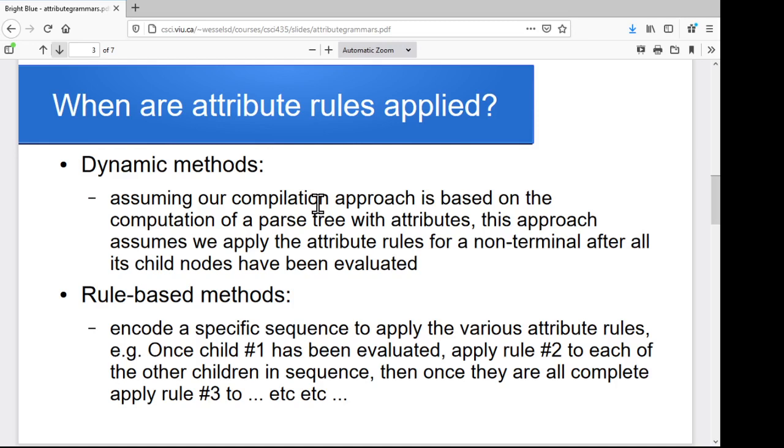Perhaps the most natural method of deciding when you're going to actually apply all those rules is to say, I've got this non-terminal, and I've got all these things fanning out in the parse tree below it. What I'll do is go off and figure all of those out, figure out all the children, and once all the children have all their values set, once all their attribute values are set, then I'll figure out the results for my current non-terminal. So this is the idea of a dynamic method, where you go off and do all the children first, and then update the parent.